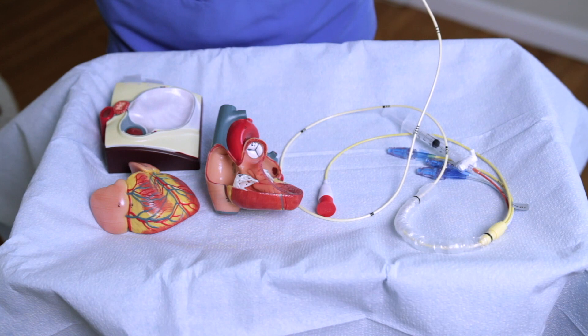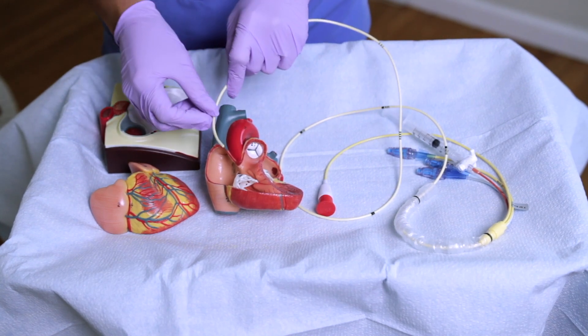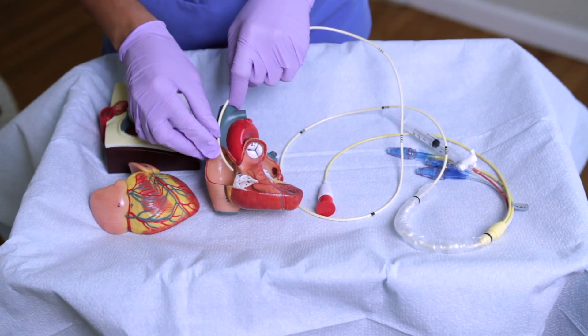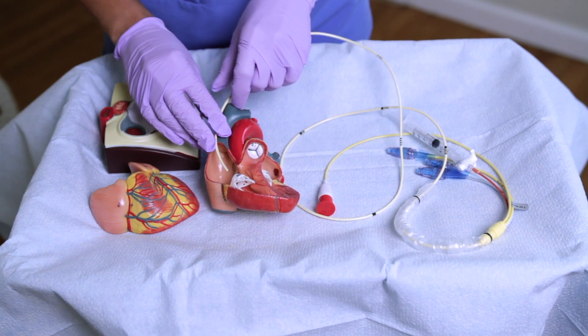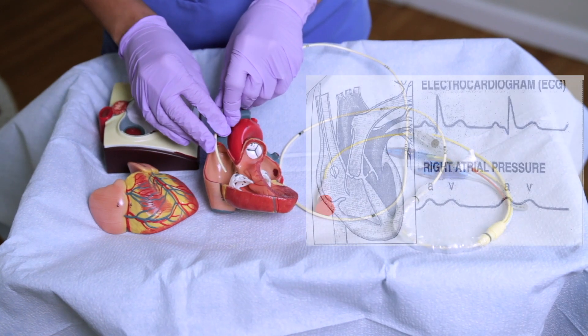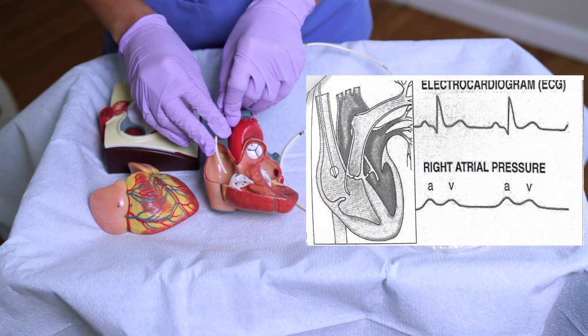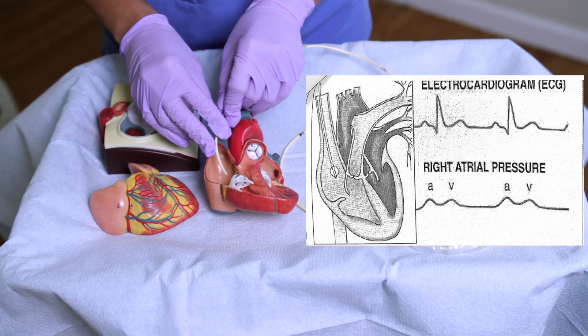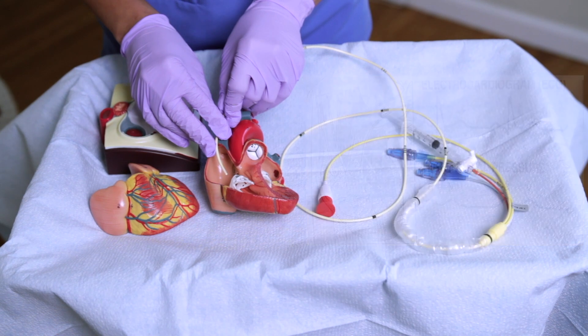I'm going to show you some photos of waveforms so you know when it's in the actual right place. As the line is introduced through the superior vena cava, it will be in the right atrium, and on the monitor you're going to see a very specific waveform. The A waves indicate atrial contraction and the V waves indicate the right atrium is filling.